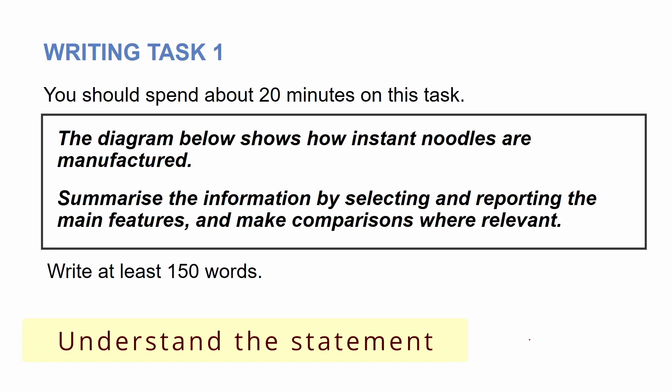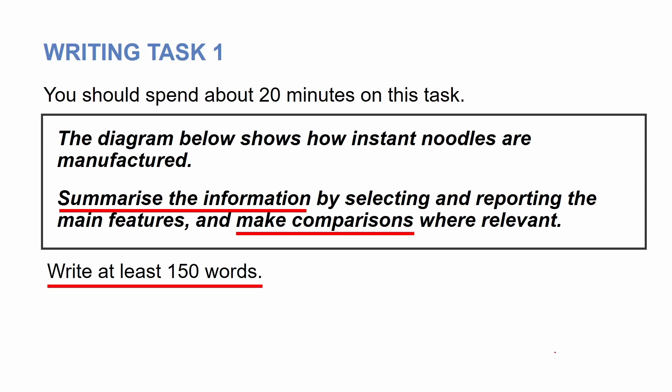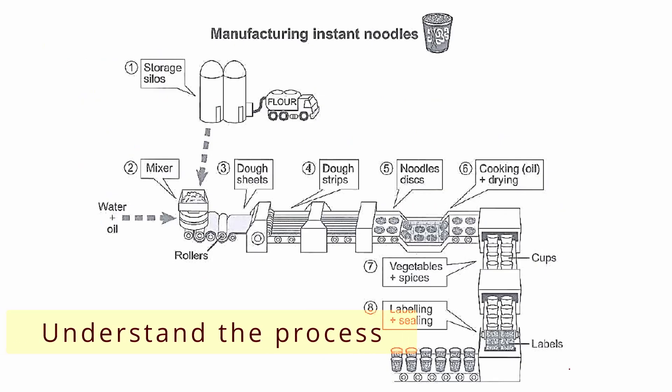The diagram below shows how instant noodles are manufactured. As you know, the instruction is always the same in writing task 1. We need to summarize the information by selecting and reporting the main features and make comparisons where relevant. Now, step 2 is to spend some time on the process to understand.